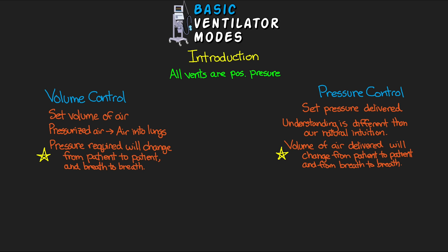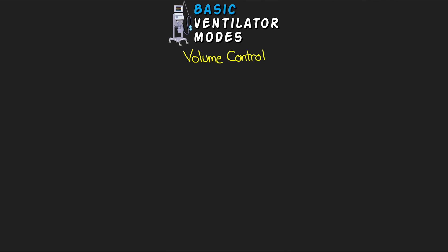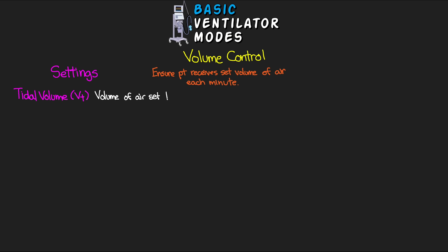For this lesson we're sticking to volume control. The main principle is that we want to ensure our patients are receiving a set volume of breath each minute. Within this category there are different modes that play different roles in impacting our patient's work of breathing. To understand the differences between these modes, we need to talk about some of the settings. The first setting is tidal volume, abbreviated Vt — this is the volume of air set to be delivered with each breath.